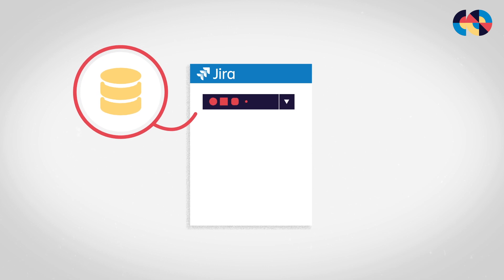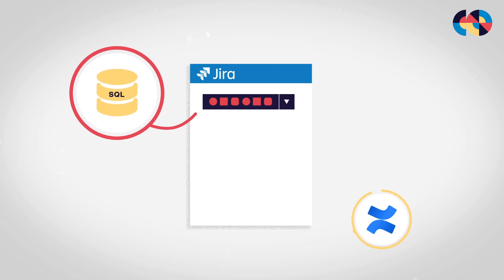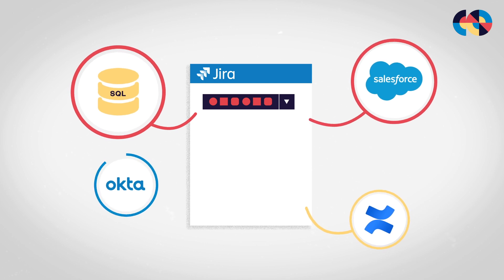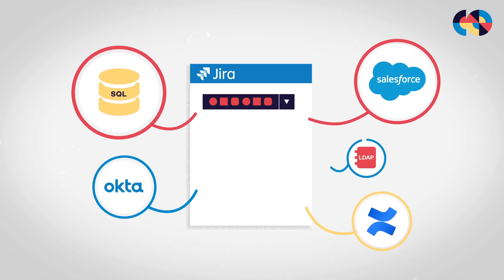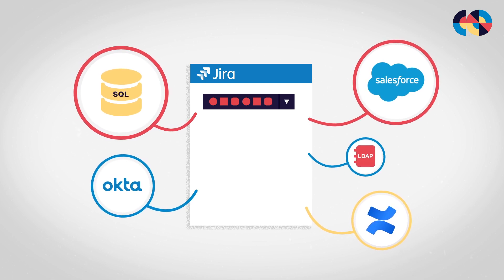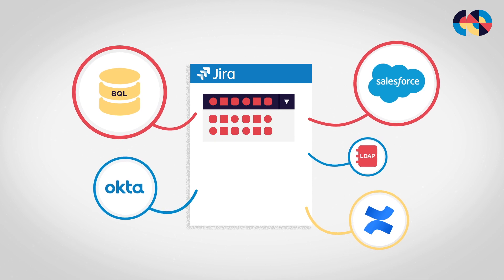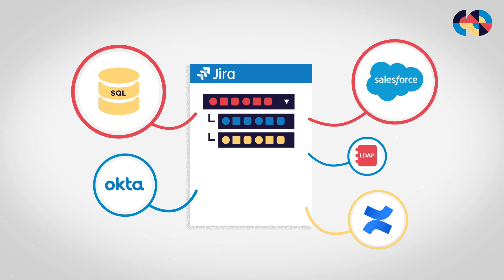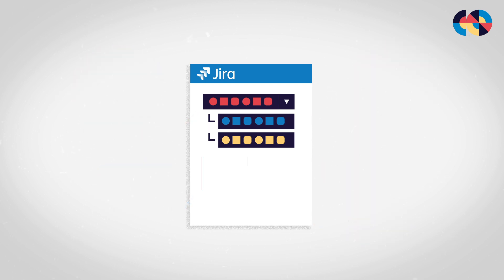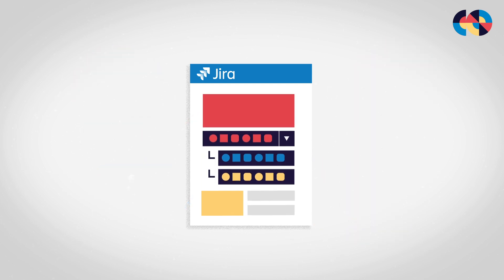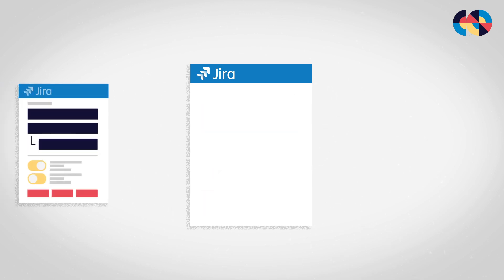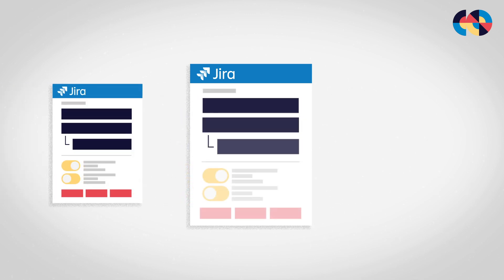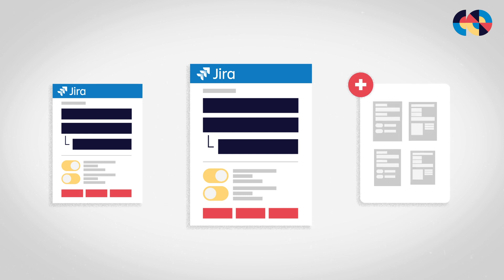It allows you to populate Jira custom fields with data from any source, ranging from SQL databases to popular cloud services or your LDAP. You can create dynamic fields that will fetch their values depending on the context of the issue and choose how data will be displayed. Setting up Elements Connect fields is fairly easy — you can even import fields configuration from your staging instance or our custom fields library.